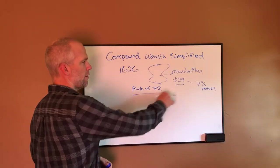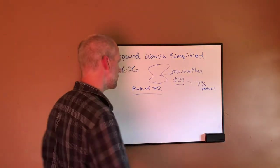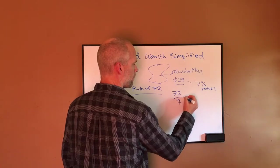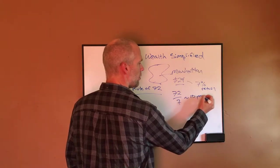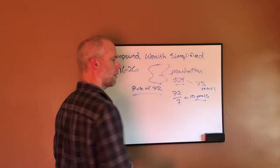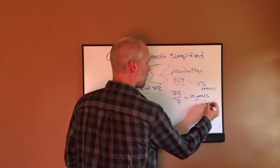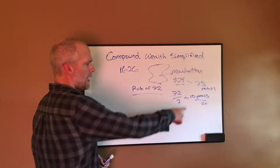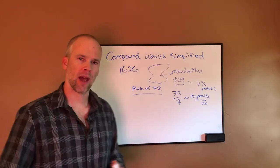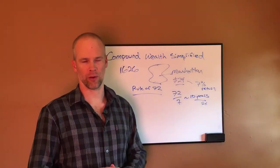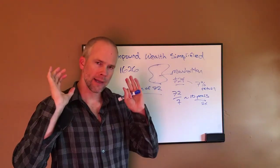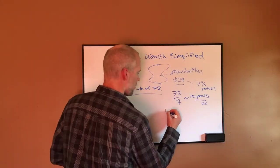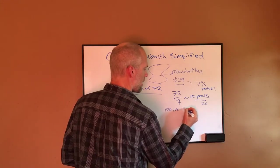So according to the rule of 72, if I'm getting a 7% rate of return, it's going to take me approximately 10 years to double my money. So I'm 2xing my money every 10 years. Now, if I can double my money every 10 years, that means every 100 years, I've got 10 doubles.